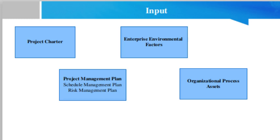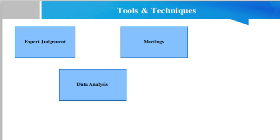The organizational process assets that can influence the Plan Cost Management process include: financial control processes, time reporting, required expenditure and management processes, management reviews, accounting codes, standard contract provisions, historical information and lessons learned repository, financial databases, and existing formal and informal estimating and budgeting-related policies.